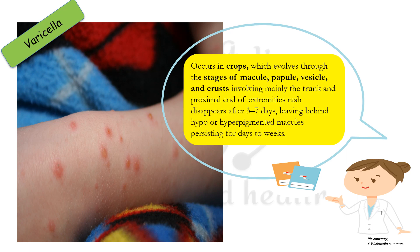In varicella, the rash occurs in crops and evolves through the stages of macule, papule, vesicle, and ultimately undergoes encrustation. The rash involves mainly the trunk and proximal end of extremities. It disappears after 3 to 7 days, leaving behind hypo- or hyperpigmented macules which persist for days to weeks.